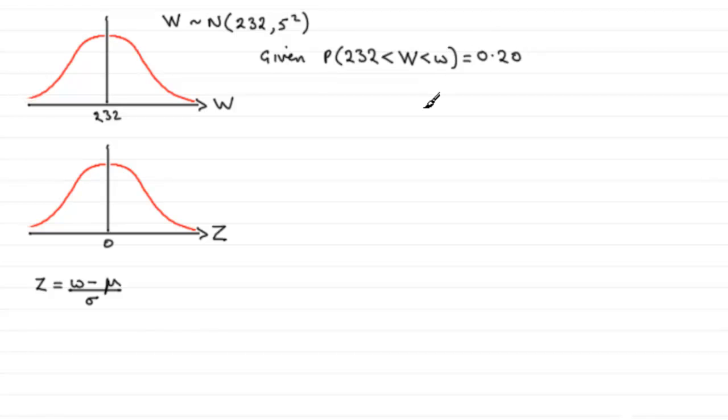got to find this observed value w. Now in the usual way, as I said earlier, I'd encourage you to draw diagrams like this. We've got to find this value w. So on our sketch, we know that this interval is to the right of 232—it's an interval between 232 and w. And the probability, let's just mark